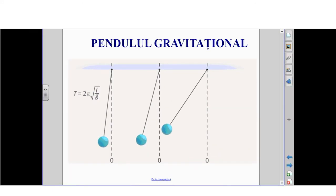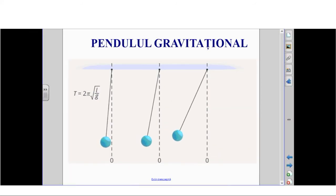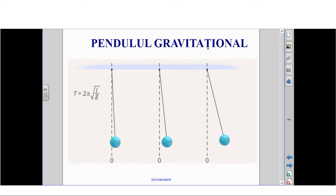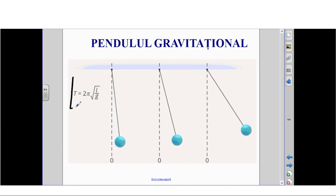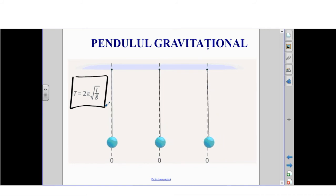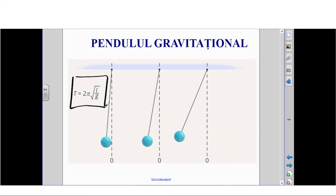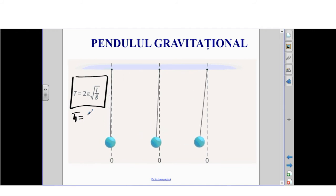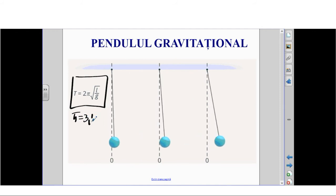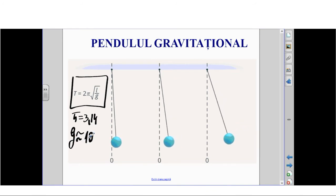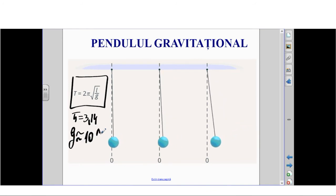Formula pentru calculul perioadei oscilațiilor pendulului gravitațional este T egal cu 2π radical din L asupra G. Dacă nu există indicații suplimentare, atunci π este egal cu 3.14, iar G îl putem lua aproximativ 10 N/kg.